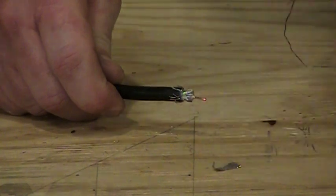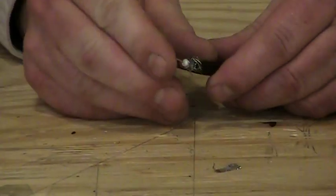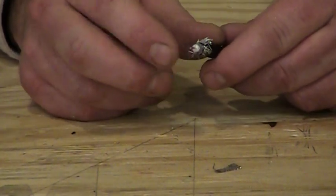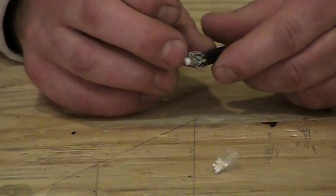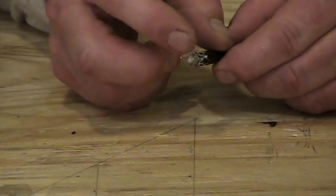If we left that foil and then folded back the next layer of braid, everything would bunch up right there because the foil is in the way. If we don't get rid of it, it's going to be very hard to get the connector on this cable.